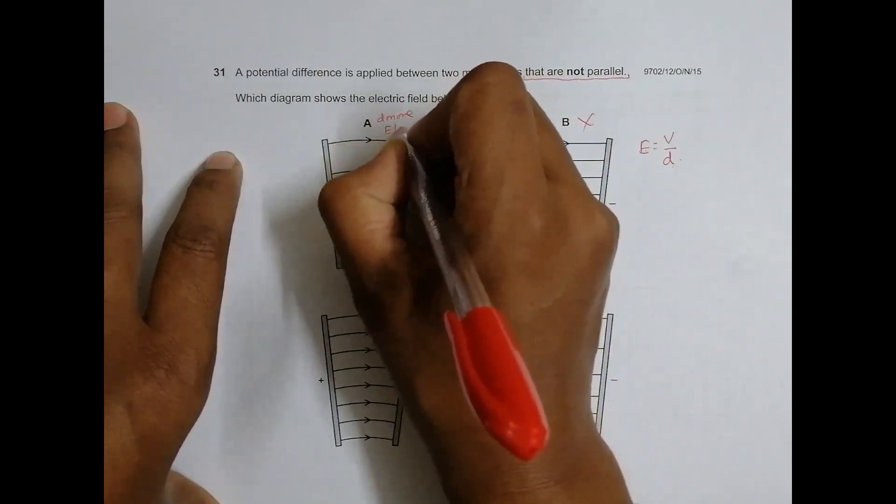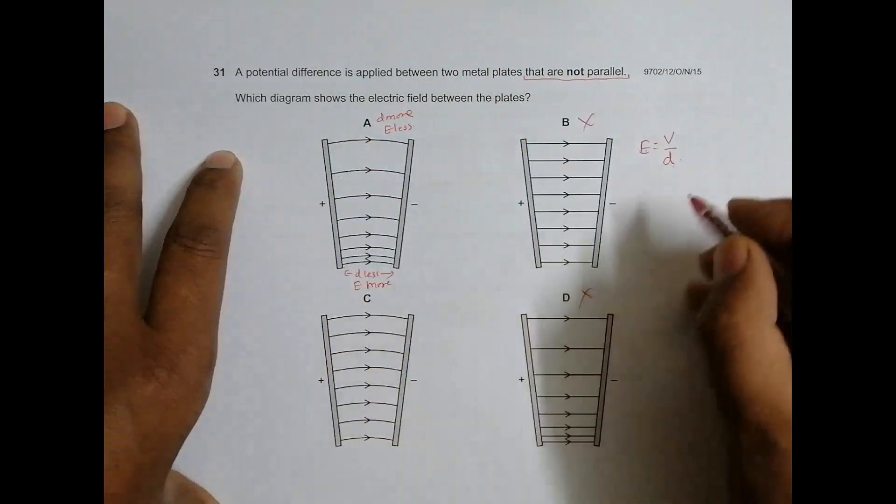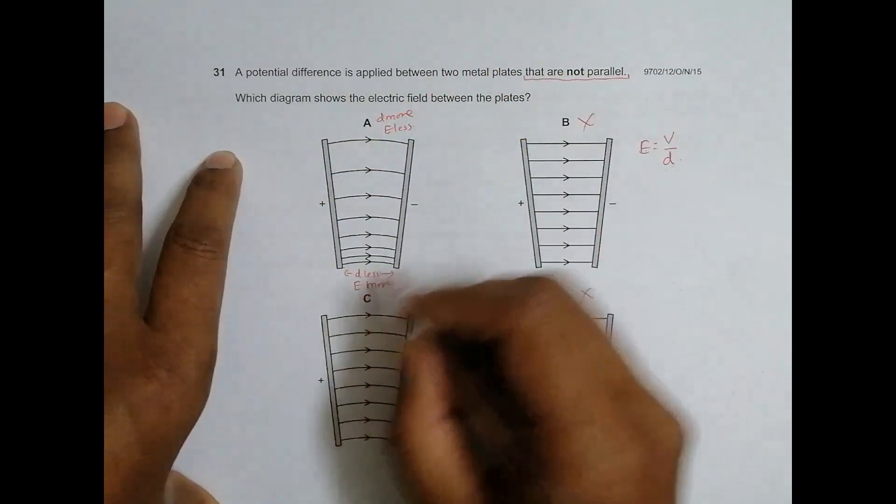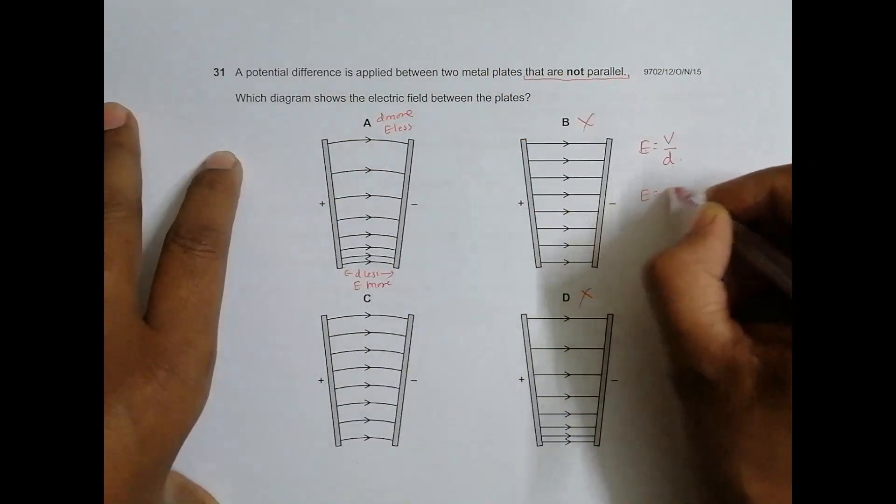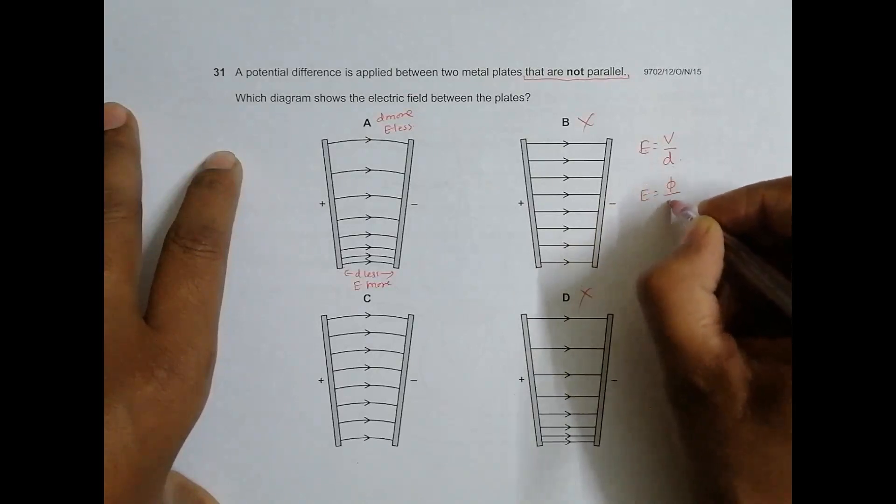Now when E is more, what I have is: if E is more, E means the flux density as well. This is the lines of force, flux, and this is area.